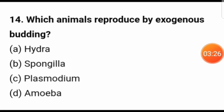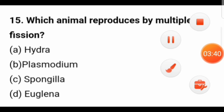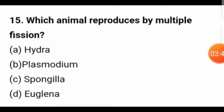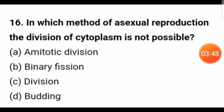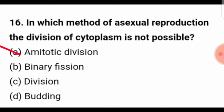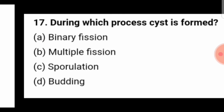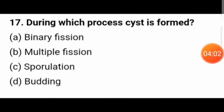Which animal reproduces by exogenous budding? Exogenous budding means the bud is formed outside the body, externally. Exogenous budding is found in hydra. Which animal reproduces by multiple fission? The right answer is plasmodium. In which method of asexual reproduction is division of cytoplasm not possible? That is in amitotic division. During which process is a cyst formed? A cyst is formed during sporulation.